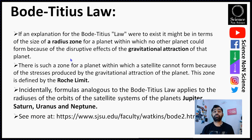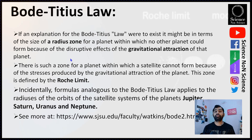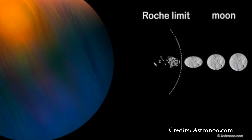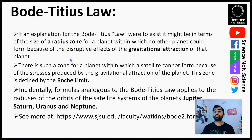If an explanation were to exist for the Bode-Titus law, it could be related to exclusion zones in which no planet can form due to the gravitational attraction of nearby planets. There is a similar zone around a planet within which a satellite cannot form due to the planet's own gravity — this is called the Roche limit. Interestingly, a formula analogous to the Bode-Titus law also exists for the satellite systems of Jupiter, Saturn, Uranus, and Neptune.